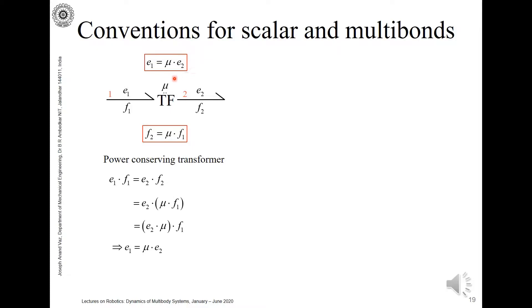For the multibond, we consider the incoming bond to the transformer, and this multibond has cardinality n. We have the effort 1 vector and flow 1 vector. We have the power, we have the transformer, and the power leaving the transformer. So here we have m bonds with effort 2 vector and flow 2 vector. Now the modulus of this transformer, let's assume it to be a matrix A.